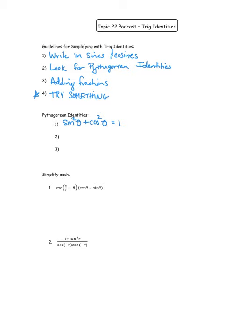To find the other Pythagorean identities, take sin²θ + cos²θ = 1 and divide everything by sin²θ. Sin² divided by sin² is 1, cosine divided by sine is cotangent — squared gives cotangent squared — and 1 divided by sine is cosecant squared. You can also divide the original by cos²θ: sine over cosine is tangent squared, cosine over cosine is 1, and 1 over cosine is secant. That's why knowing the reciprocal identities is really important.